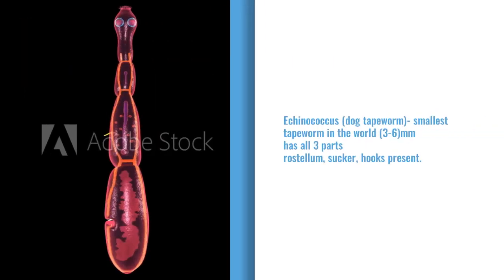The last tapeworm we are going to study is Echinococcus granulosus, called the dog tapeworm. The most special thing is that this is the smallest tapeworm — only 3 to 6 millimeters. It is so small, but it has everything: rostellum, hooks, and the basic 3 parts — scolex, neck, and strobila. It is small but strong.